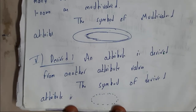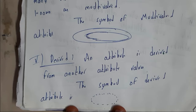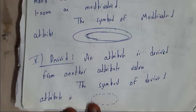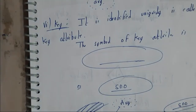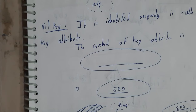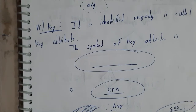A derived attribute is derived from another attribute's value. For example, if you have a table with marks, the average would be derived from those marks and stored in the table. A derived attribute is represented with a dotted oval.